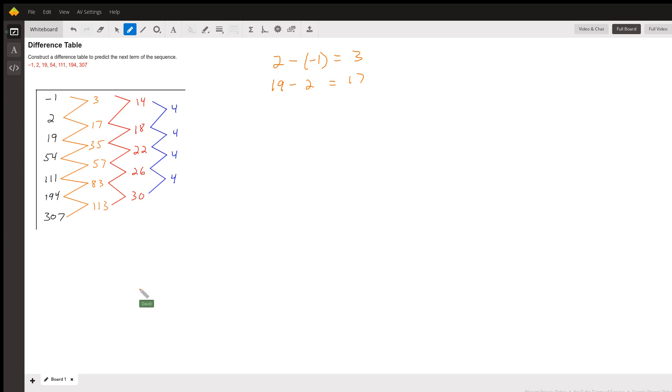And we repeat that process until we get to a column where the differences are all the same. And you notice this last column over here, the differences are all 4. So once we have that, we can stop making the difference table and now work on finding the correct next term.